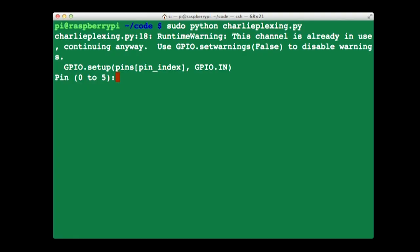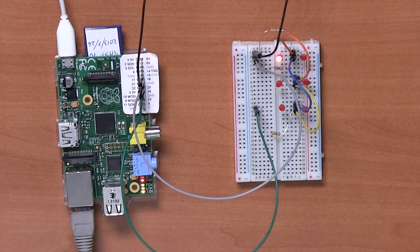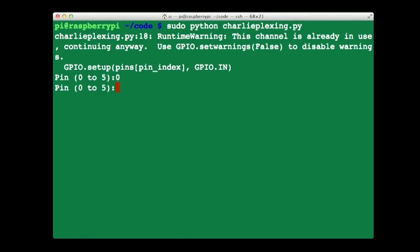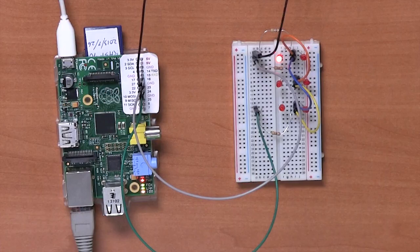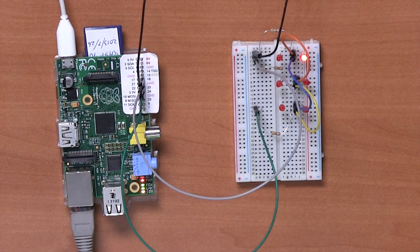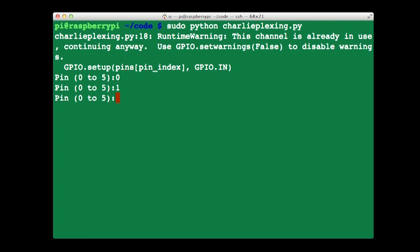The software has prompted us to enter a pin—really an LED would be a better word there—that we want to turn on. So let's put in zero and press enter. We can see now that the top left LED has lit. So let's try, might as well make our way through the sequence. Let's try number one. Okay, and the second LED on the top row is lit. Let's just work our way through them all. So if we put in number two.